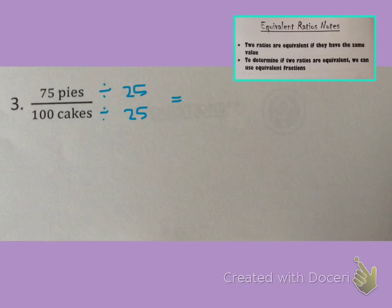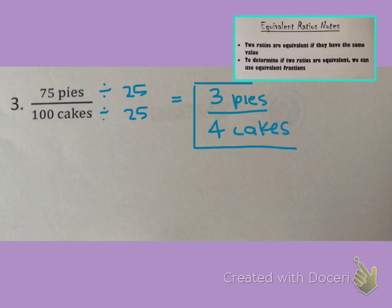25 goes evenly into both 75 and 100. 75 divided by 25 is 3, so that would be 3 pies. And then 100 divided by 25 is 4, so that would be 4 cakes. So, 3 pies to 4 cakes is equivalent to 75 pies to 100 cakes. So, that's cool, and like I said, we could have multiplied, but that might be a little more difficult, so we're going to try division on this one.